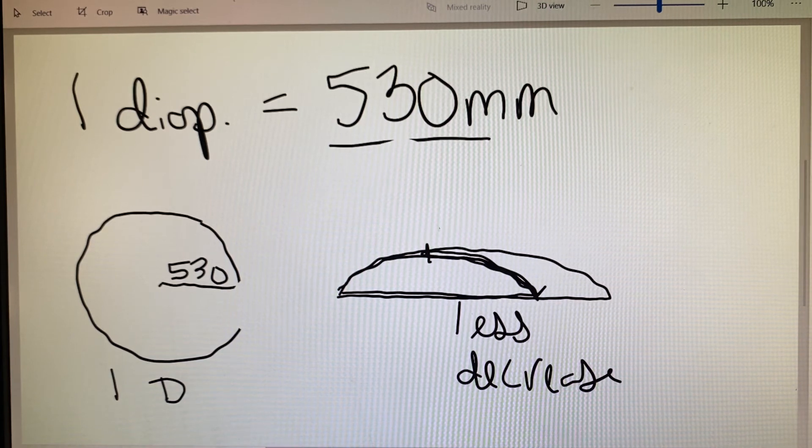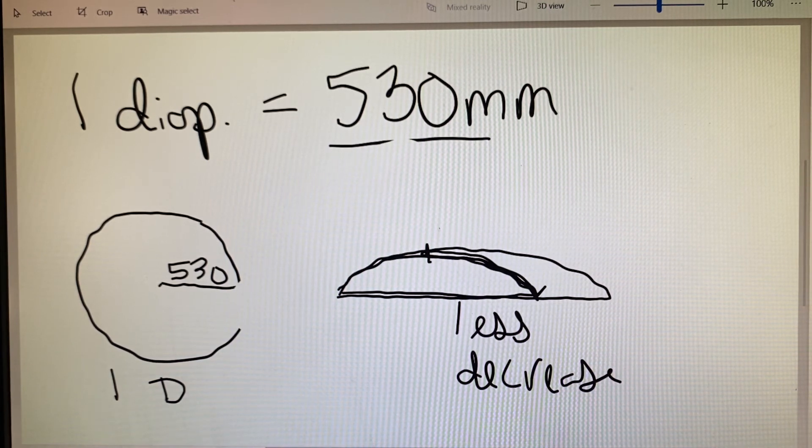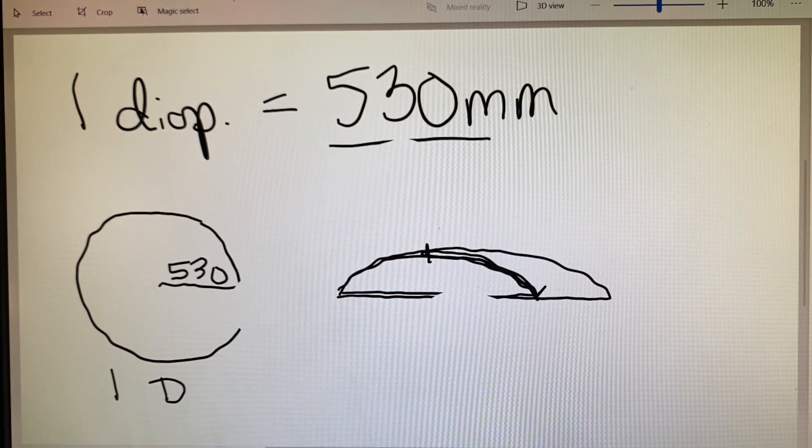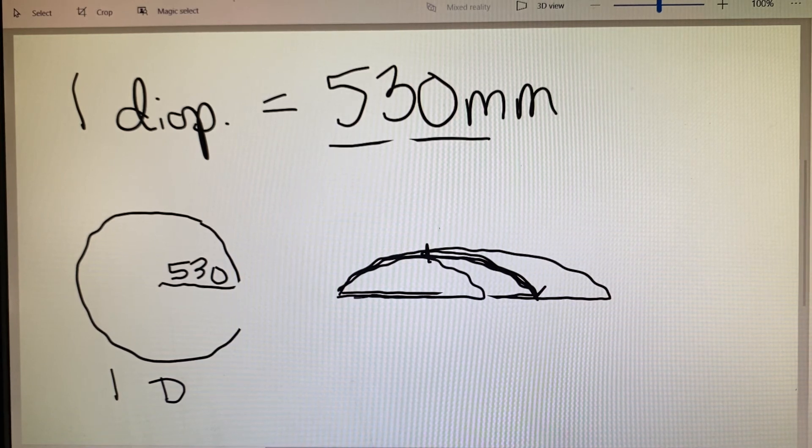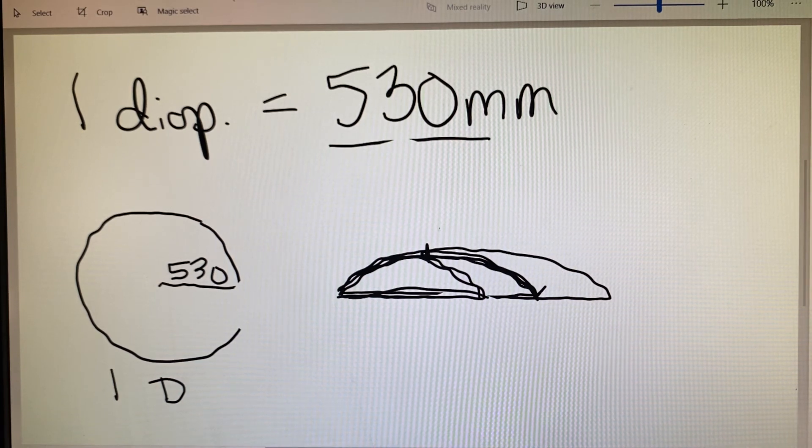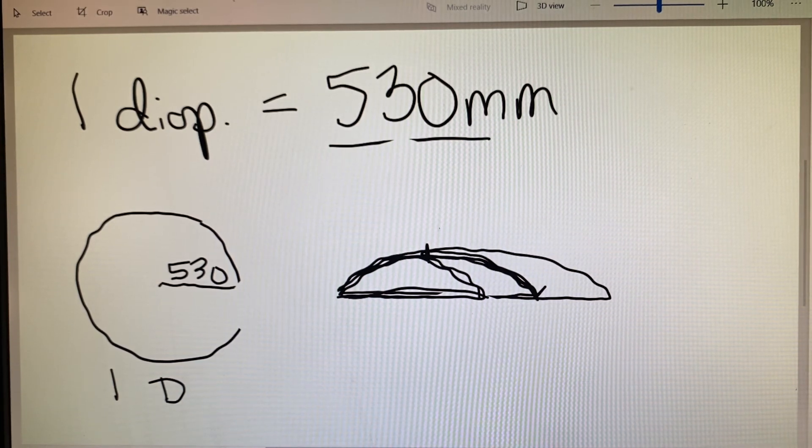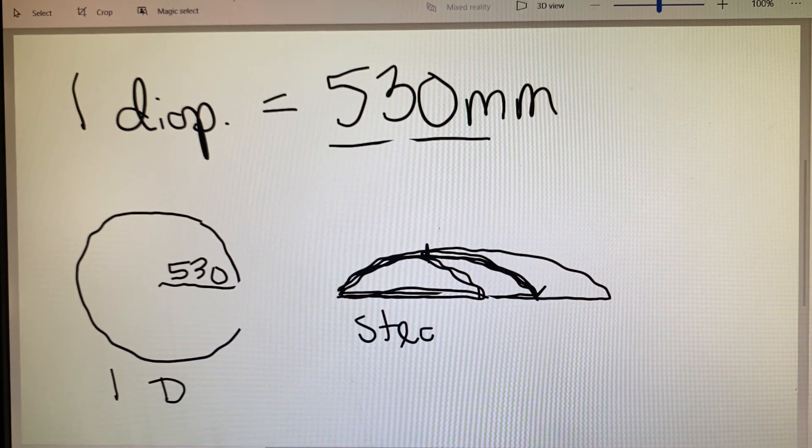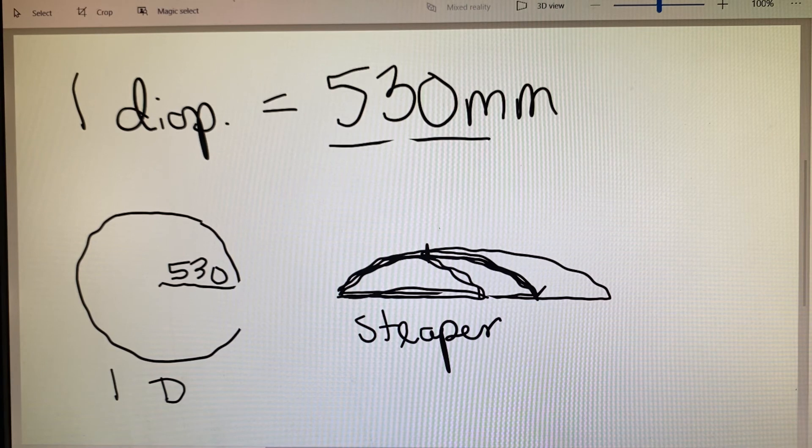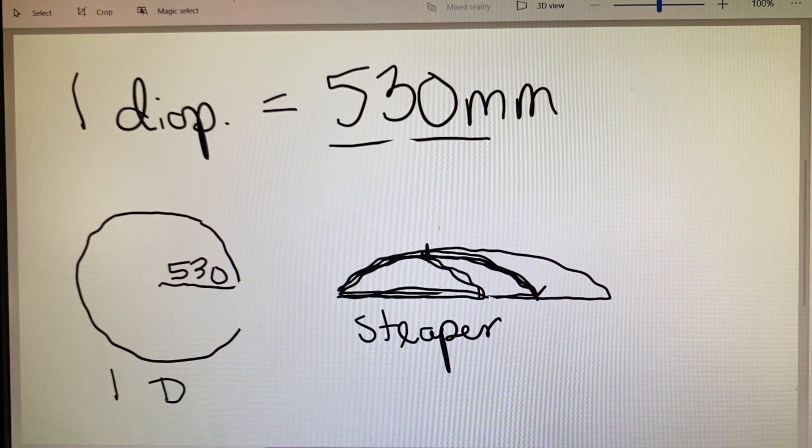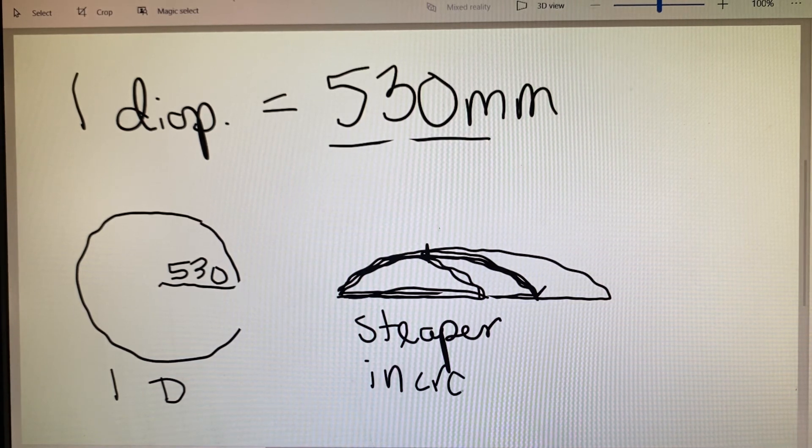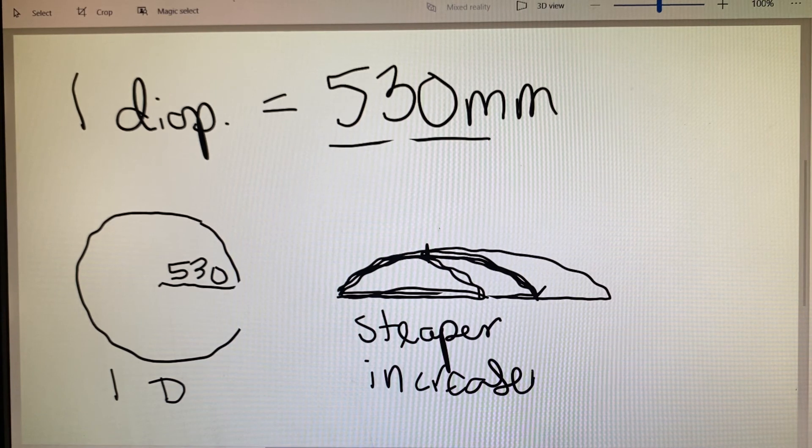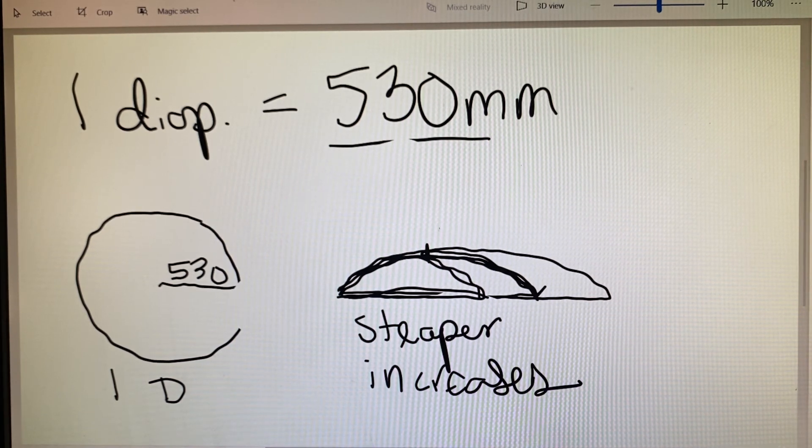If we had that same situation, but this time we were dealing with a smaller lens blank. That smaller lens blank now has a steeper curve. We can see that shape is much curvier, and then that steeper curve increases the power of this lens. So more power.